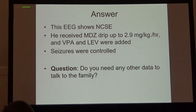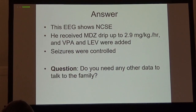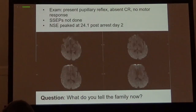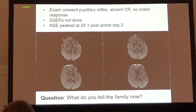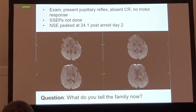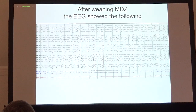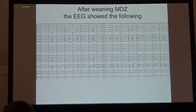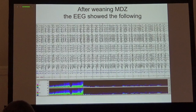We treated the patient aggressively, controlling the seizures with a midazolam drip, valproic acid, and Keppra. For prognostic data to discuss with the family, we obtained an MRI; SSEPs were unfortunately not done. We felt the EEG findings were not a bad prognostic sign, so we encouraged the family to continue. After weaning the midazolam, however, the patient went into even higher-frequency non-convulsive status.